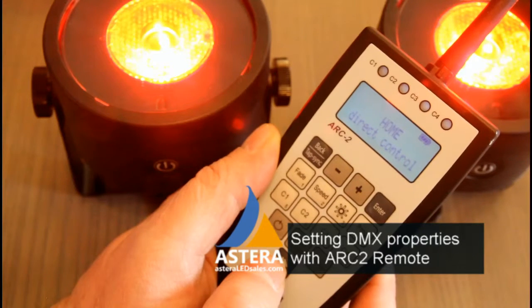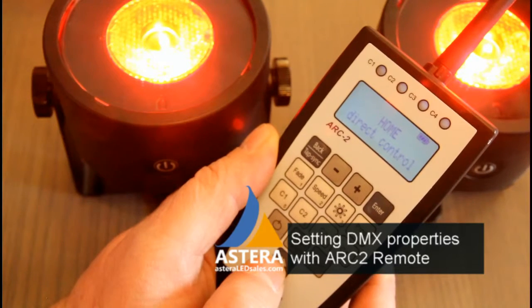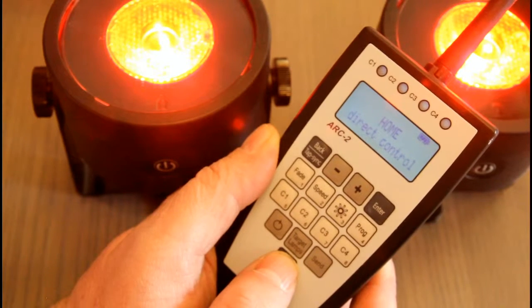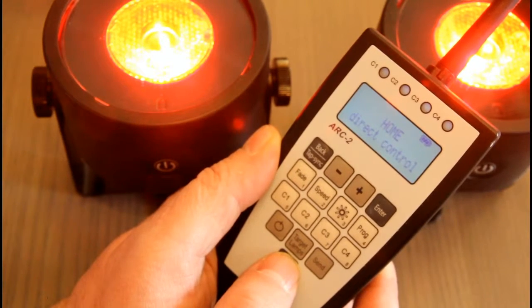I'm going to program the DMX settings on these two light drops with this Arc 2 RF Remote Transmitter. The first thing I'm going to do is hit the home button until we see home on the screen.